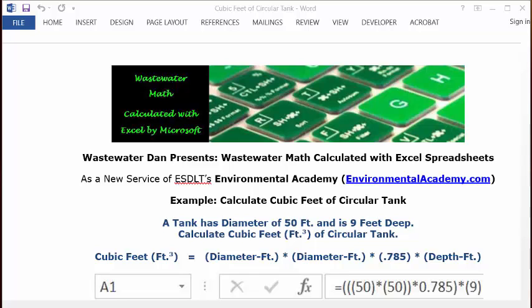Today's formula is cubic feet equals diameter in feet times diameter in feet times 0.785 times depth in feet.